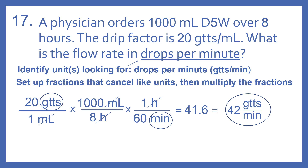Then we just do the math. So 20 times 1,000 is 20,000, divided by one times eight times 60, which is 480. That gives us 41.6, or 42 drops per minute when we round up.